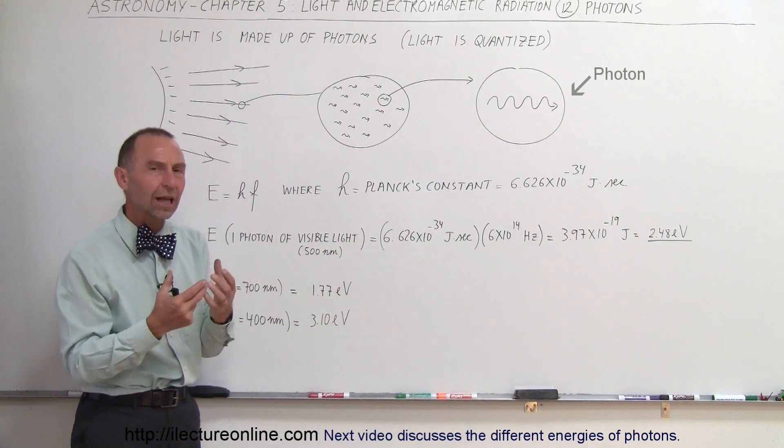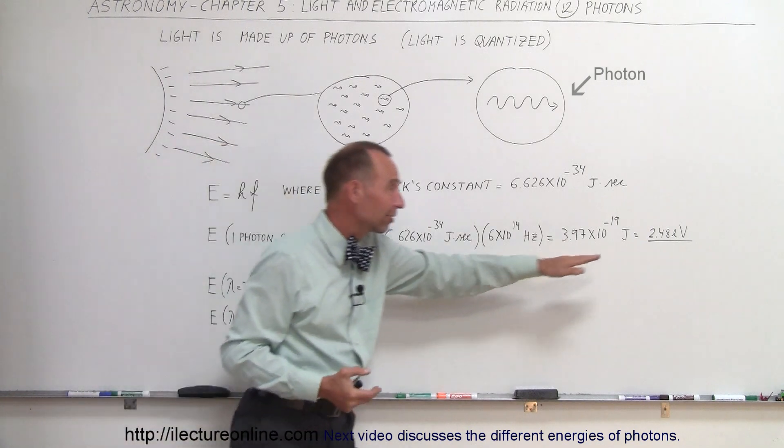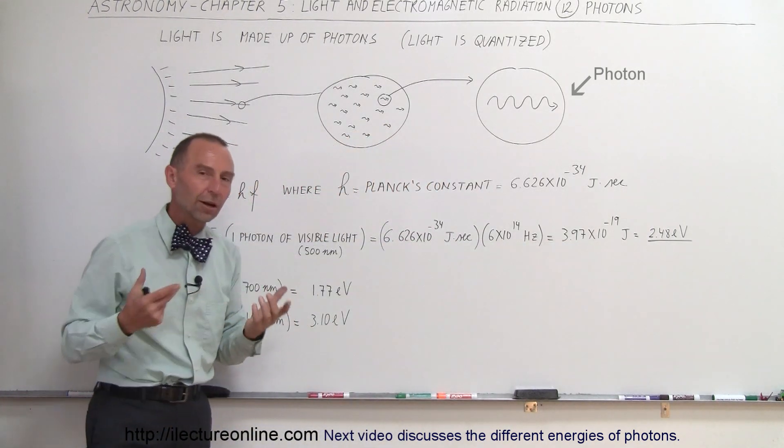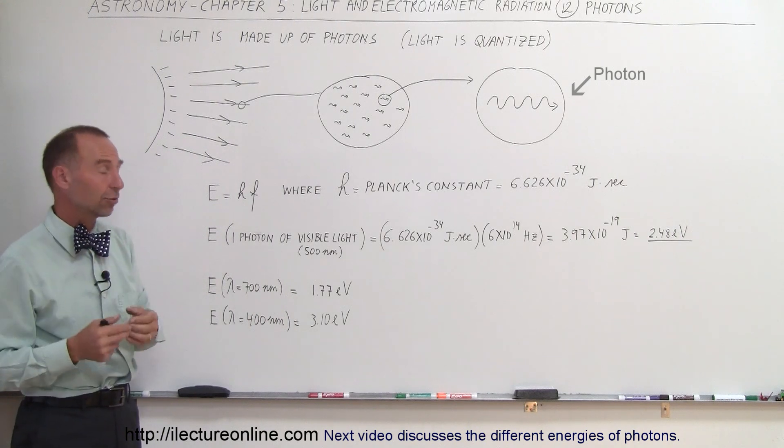Electron volts is a term we use a lot because it's a lot simpler to talk about something like this than to talk about something like this. So a typical photon of light contains about 2.5 electron volts.